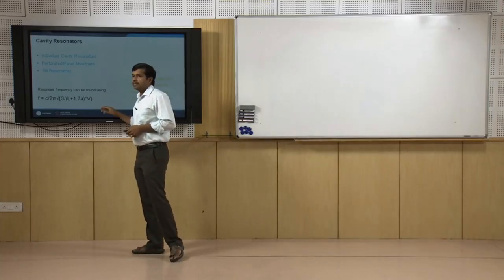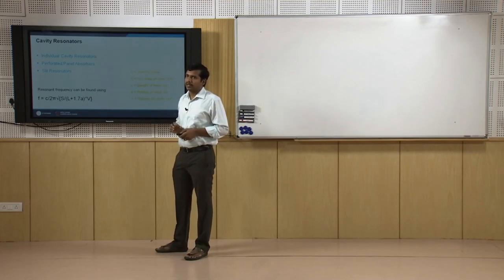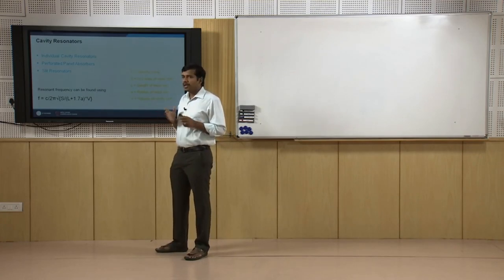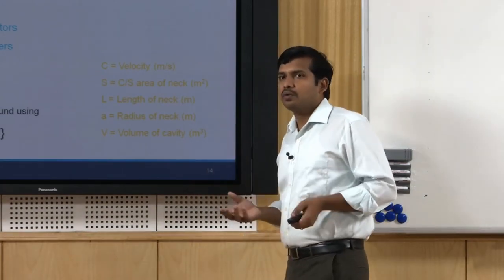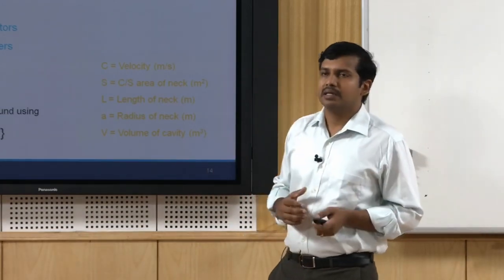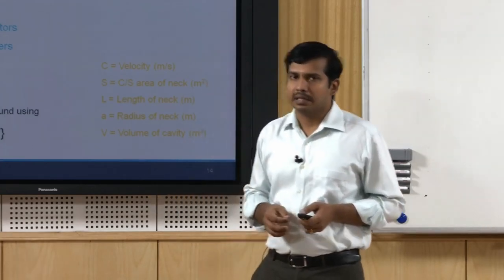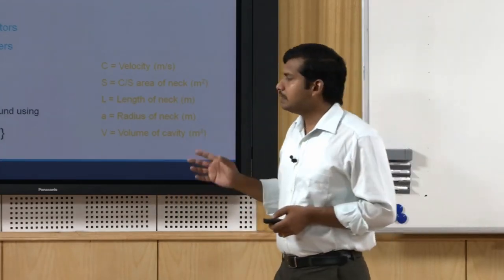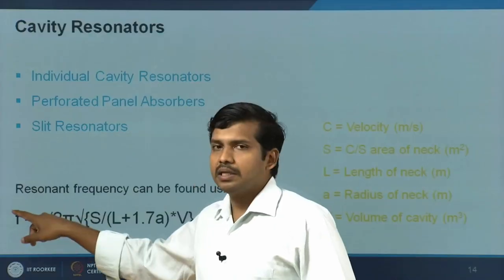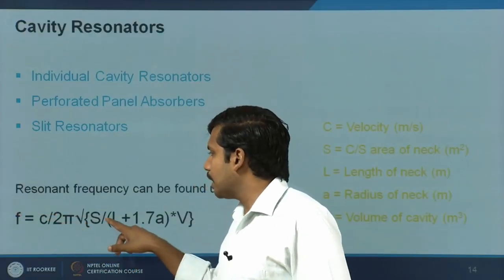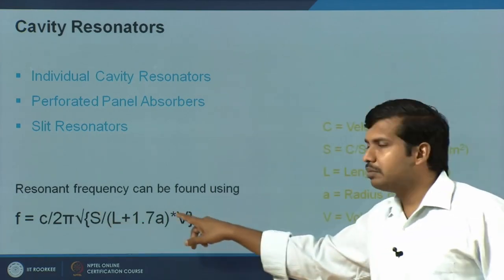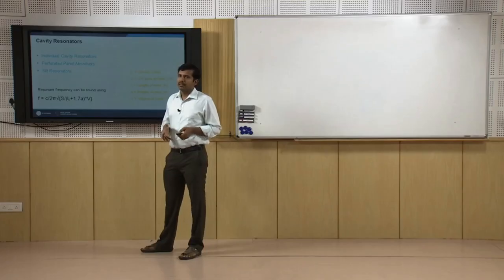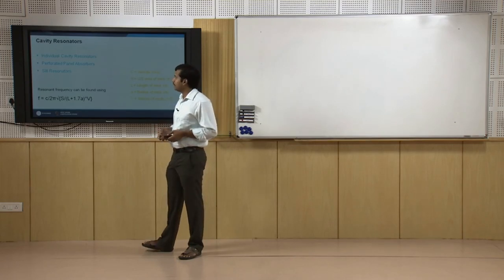The resonant frequency — at which frequency this cavity will be effective — can be designed for a specific problem frequency. For example, if your hall or room has excessively high reverberation time at 125 Hz or 63 Hz, you have a formula. Knowing the frequency and fixed velocity, you can determine the cross section and volume of the cavity which will arrest frequencies at 63 or 125 Hz.